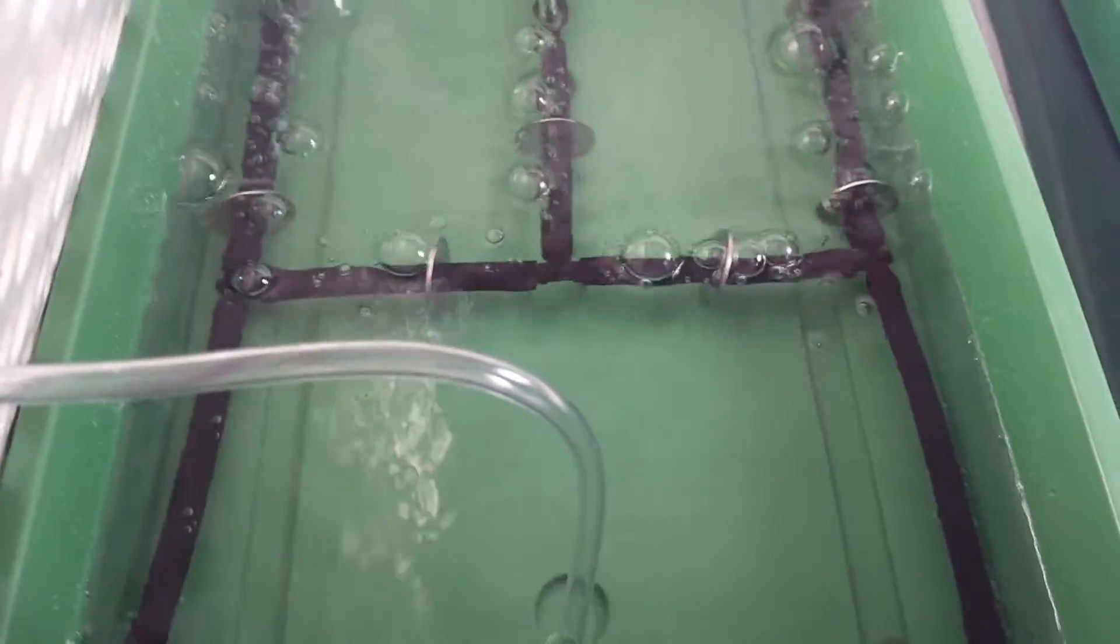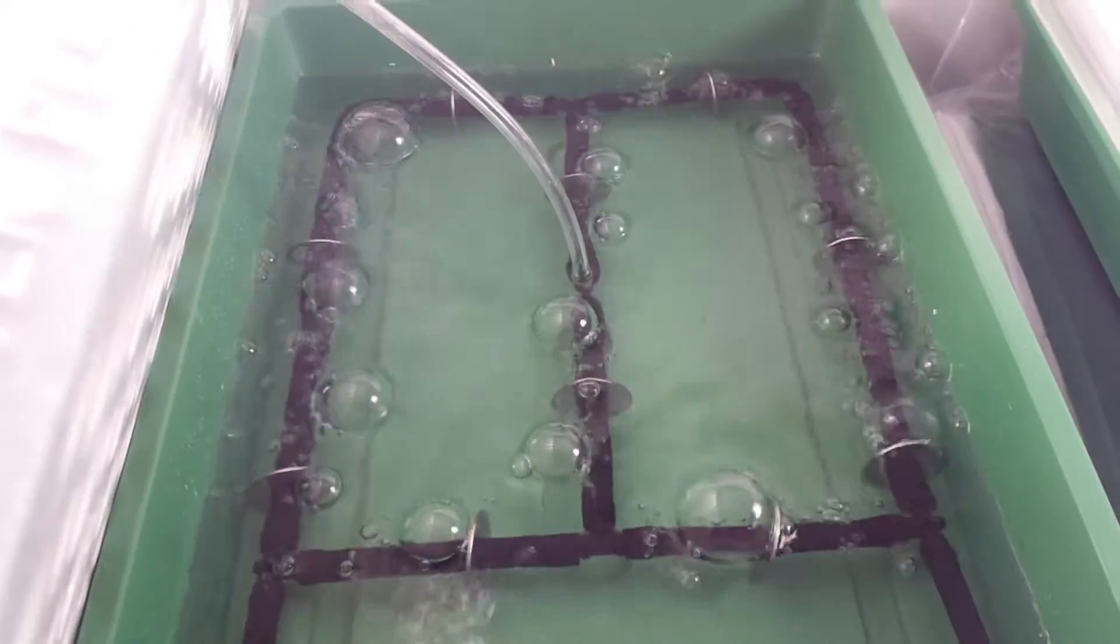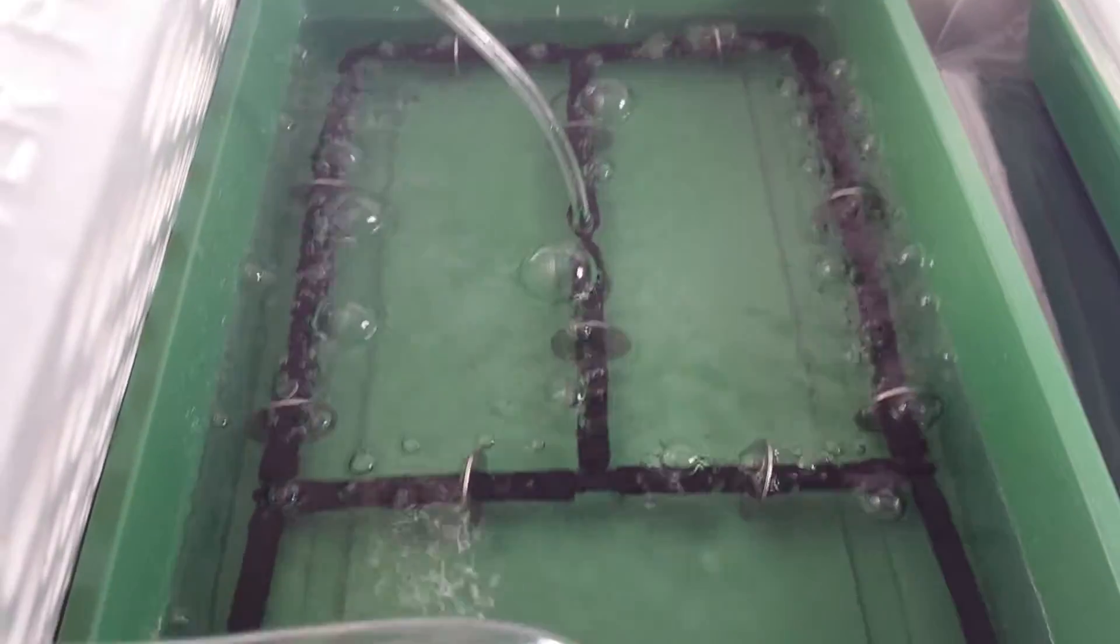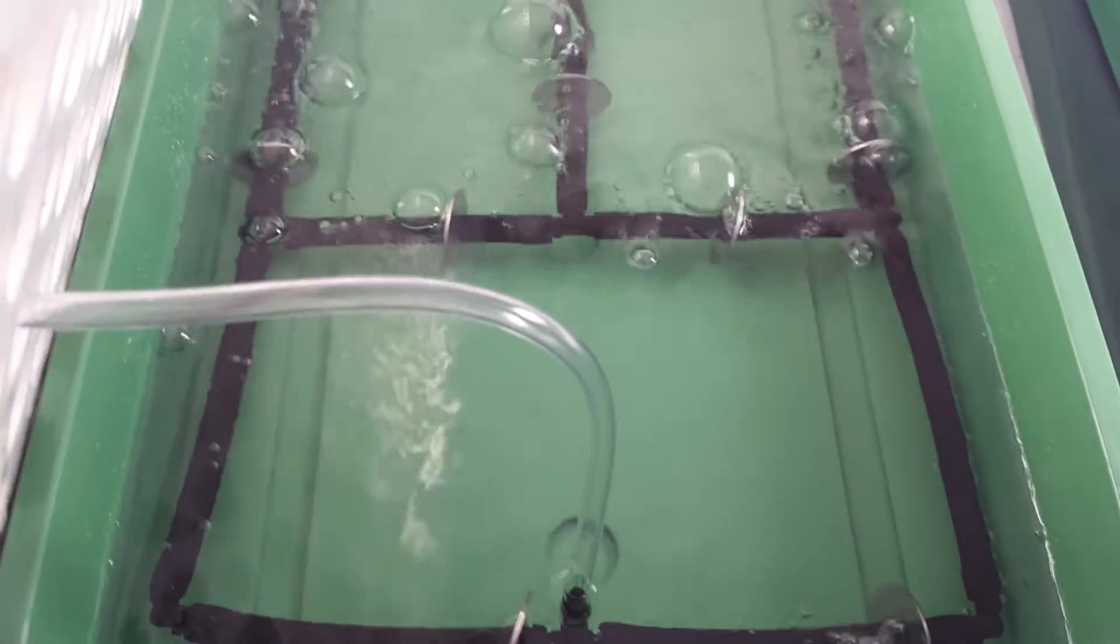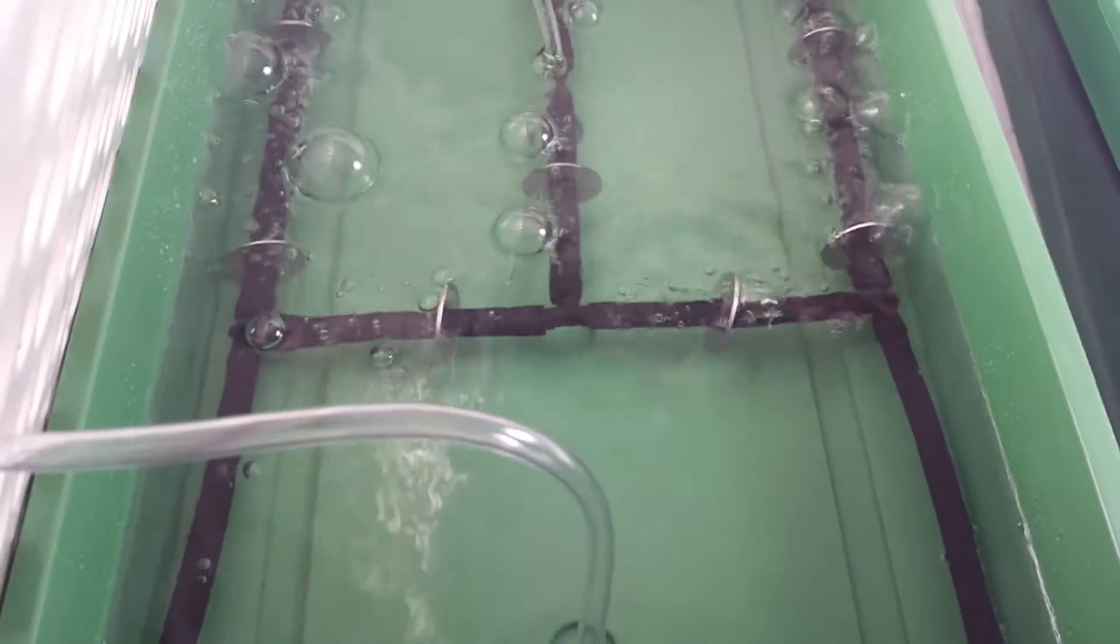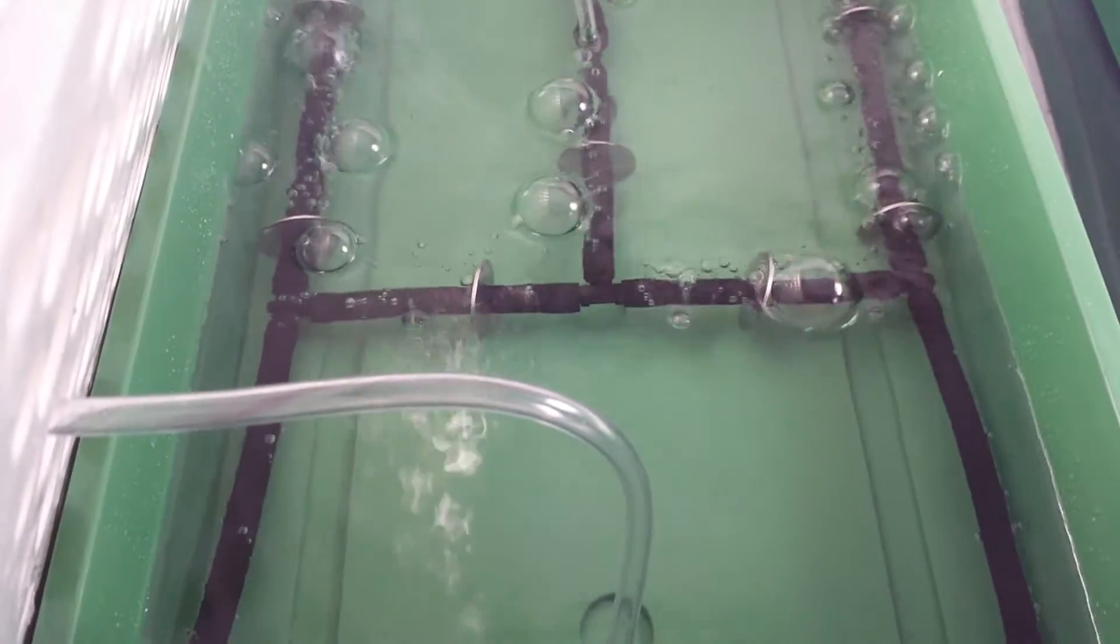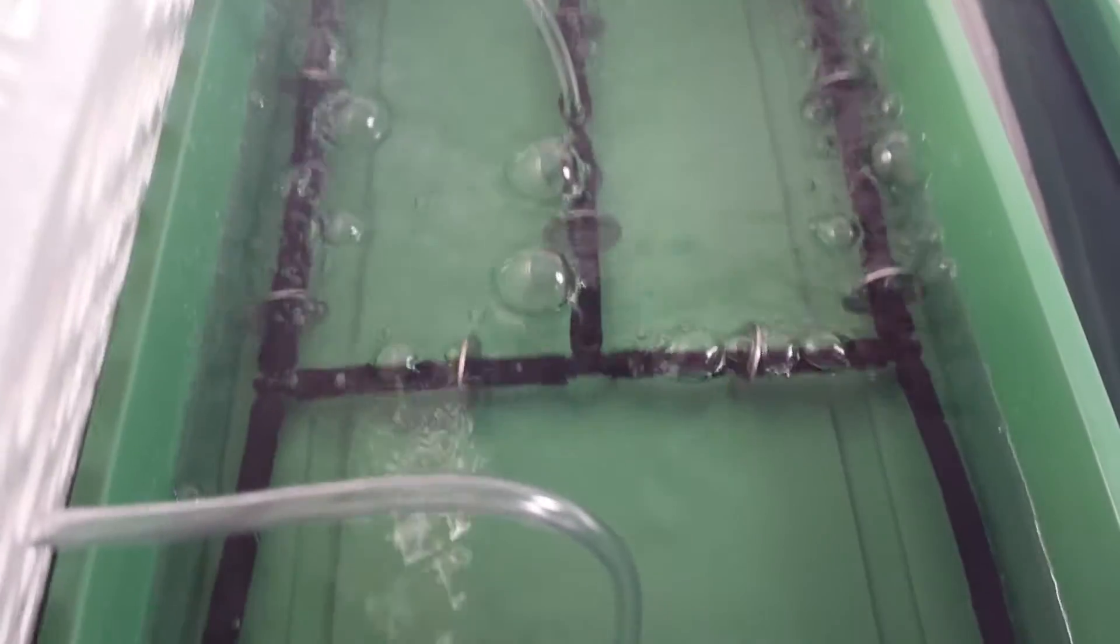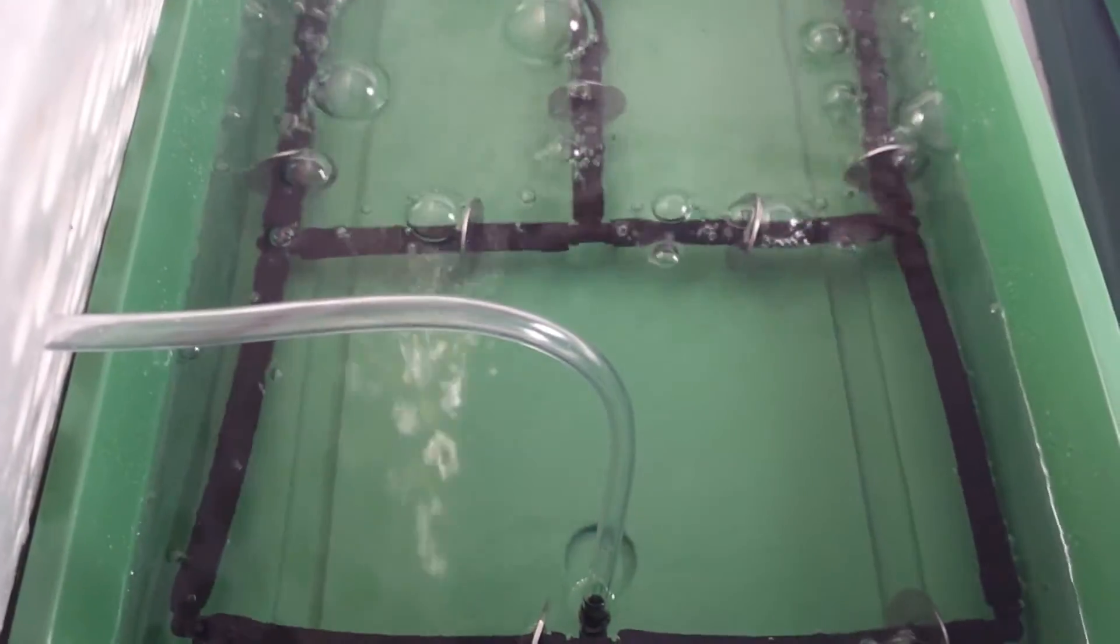The other thing I noticed is with regular soaker hoses, the washers that they put on don't weigh the unit down very well. Because again, I think there's more air restriction because there's not as many holes in soaker hoses.